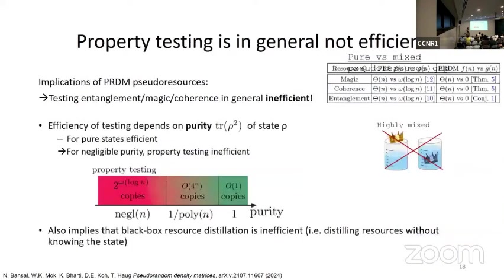This has very strong implications for property testing. What this implies is that testing entanglement, magic, and coherence is in general inefficient. Because these ensembles are indistinguishable, there cannot be any property test for these resources — otherwise PADMs with these resource gaps couldn't exist. So entanglement, magic, and coherence — although they are the key properties of quantum computing and quantum information — there is no efficient way to tell them apart in general. You cannot efficiently say whether a state has high or low resource. We show this depends heavily on purity: for pure states, there are efficient tests for these resources, but once you go to low purity states, we don't know how to test them. And this also implies that black-box resource distillation — distilling resources without knowing the state — is inherently inefficient.